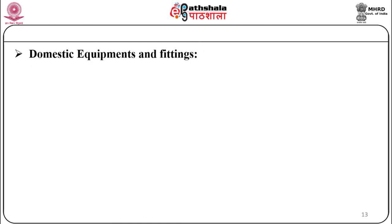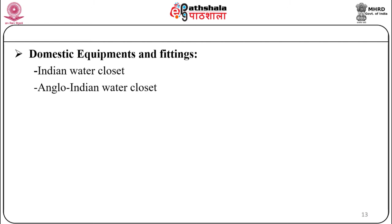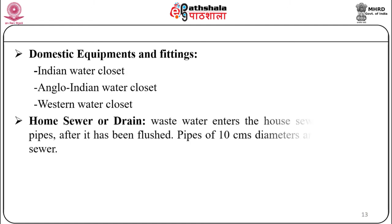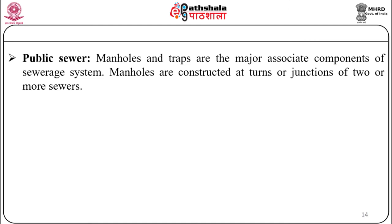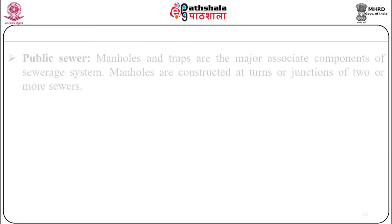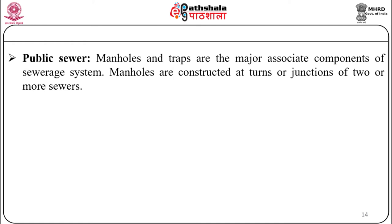Domestic equipment and fittings include the Indian water closet, Anglo-Indian water closet, and Western water closet. Home sewers drain waste water entering through soil pipes after flushing; pipes of 10 cm diameter are used as house sewers. Public sewers, manholes, and traps are the major associated components of the sewer system. Manholes are constructed at turns or junctions of two or more sewers.